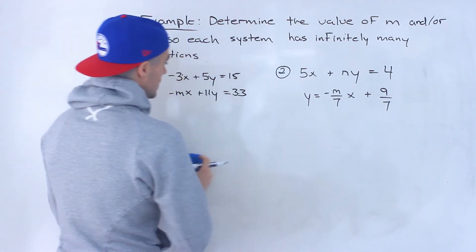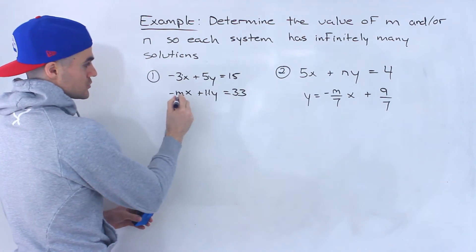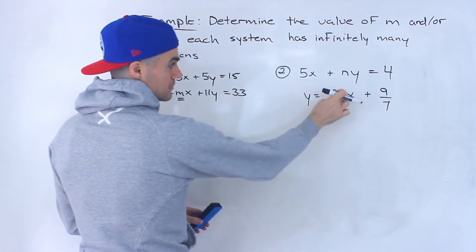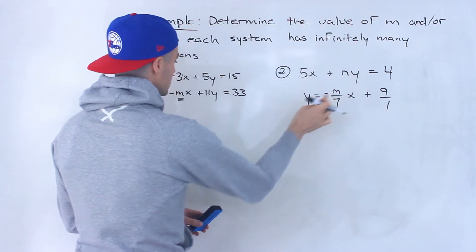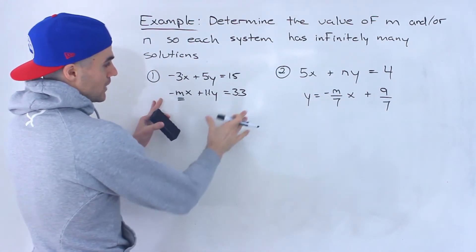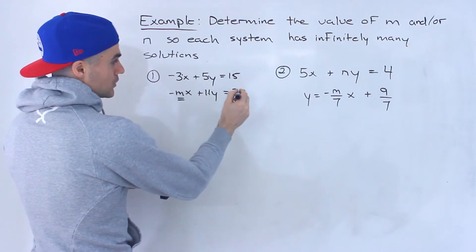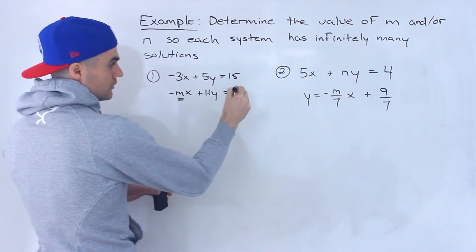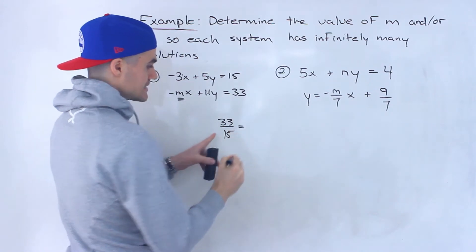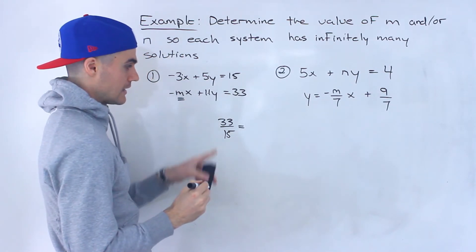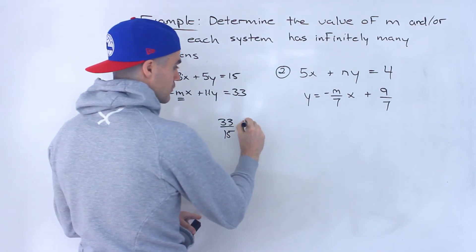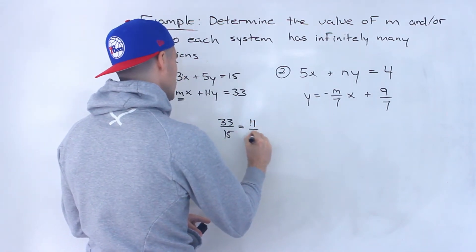So there are multiple ways to do this. Notice here, first off, there's only one constant to solve for: the m. In this second one, there's going to be m and n to solve for. So this first one is pretty easy because it's already in the format where we can see the ratios clearly. Notice that 33 over 15 — what does that simplify to? We could divide the numerator and denominator by 3, which would simplify to 11 over 5.